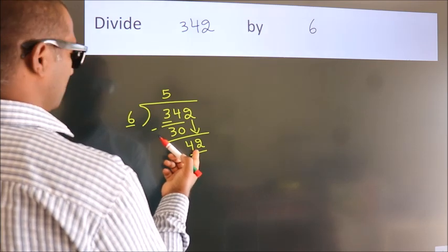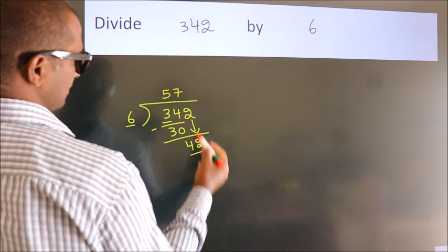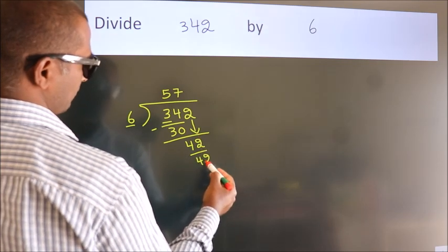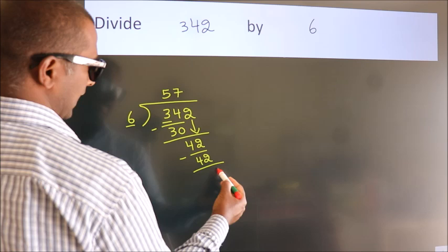When do we get 42? In 6 table, 6 times 7, 42. Now we subtract. We get 0.